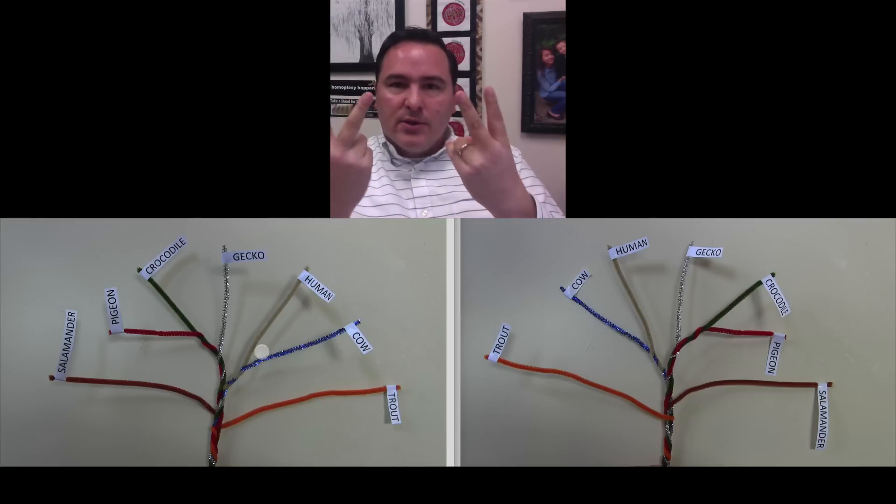It doesn't matter really the way that the nodes work. When you have those branching points, you can twist those around as much as you want, and it doesn't change the fact that the human and the cow share a most recent common ancestor relative to all of the other organisms.